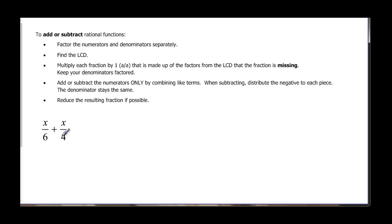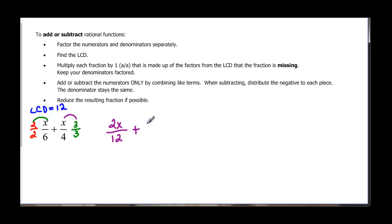So when we did x over 6 plus x over 4, the least common denominator was 12. We multiply the first fraction by 2 over 2 and the second by 3 over 3. Multiplying gives us 2x over 12 plus 3x over 12. My denominators are the same, so I get to add. I have 2x plus 3x, which is 5x, and I carry along the 12. So the answer is 5x over 12.